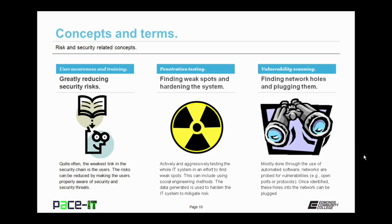Similar to penetration testing is vulnerability scanning — the finding of network holes and then plugging them. It's mostly done through the use of automated software. Networks are probed for vulnerabilities such as open ports or unnecessary protocols. Once these ports or protocols have been identified, these holes into the network can then be plugged. Remember, you need to have authorization to perform vulnerability scanning, or you may be having an uncomfortable discussion with your security personnel.